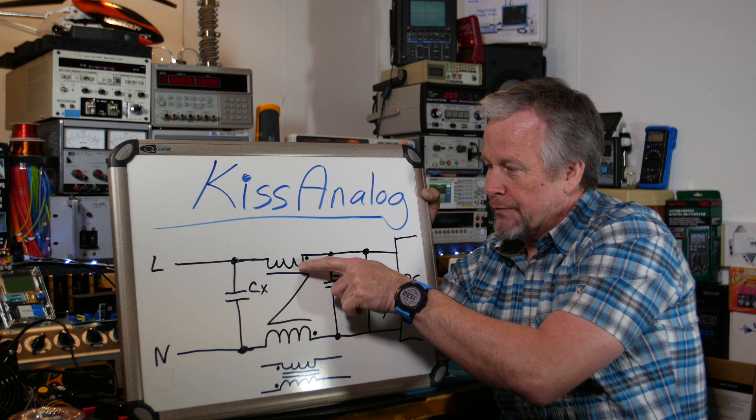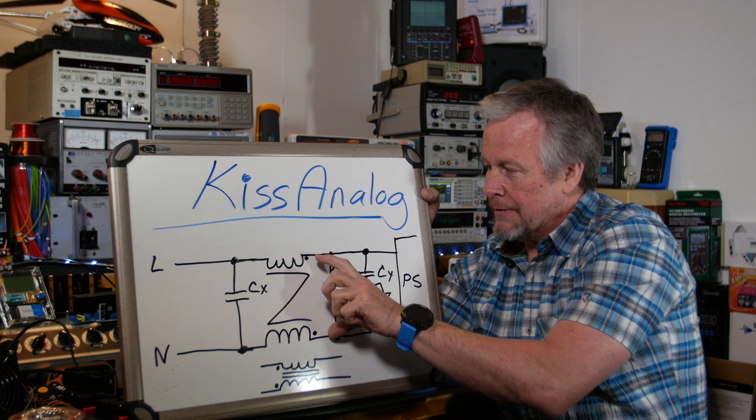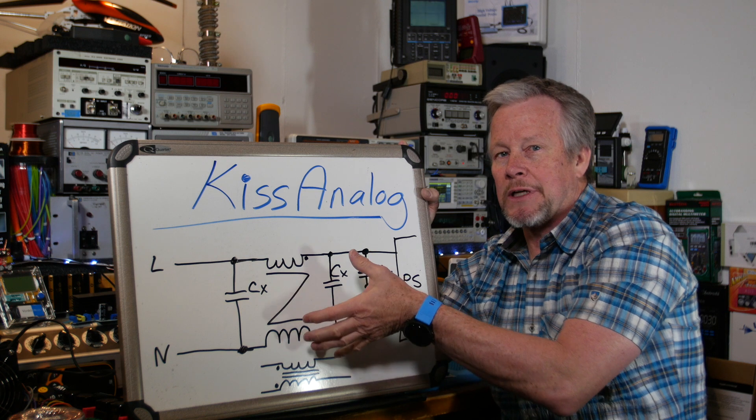As it goes through here it builds a field. As this one goes through and builds a field, the dots are in the same polarity so the field gets real big and it chokes it off. It builds a lot of inductance.